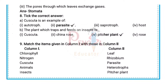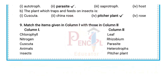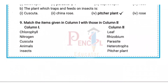Eighth question: Choose the correct answer. (a) Cuscuta is an example of — correct answer is: Parasite. (b) The plant which traps and feeds on insects — correct answer is: Pitcher plant.